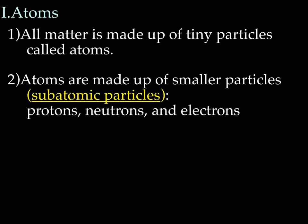Atoms are made up of even smaller particles called subatomic particles. The three subatomic particles are protons, neutrons, and electrons. You need to know the name subatomic particles and what the three subatomic particles are. We're going to spend the rest of the lecture talking about protons, neutrons, and electrons.